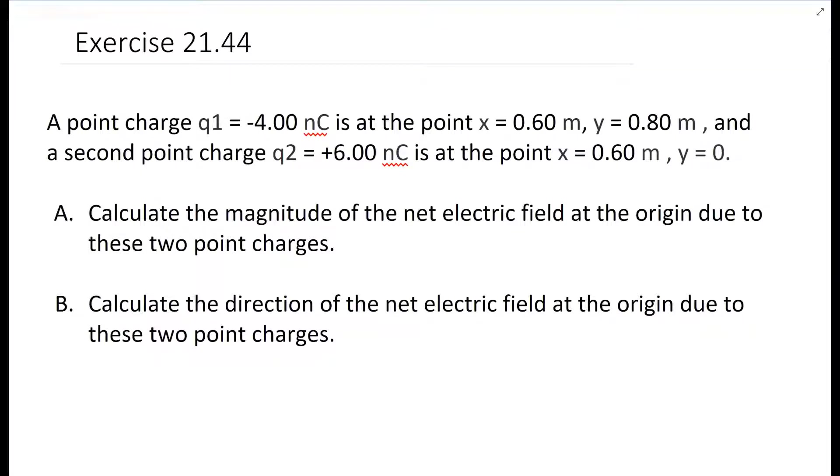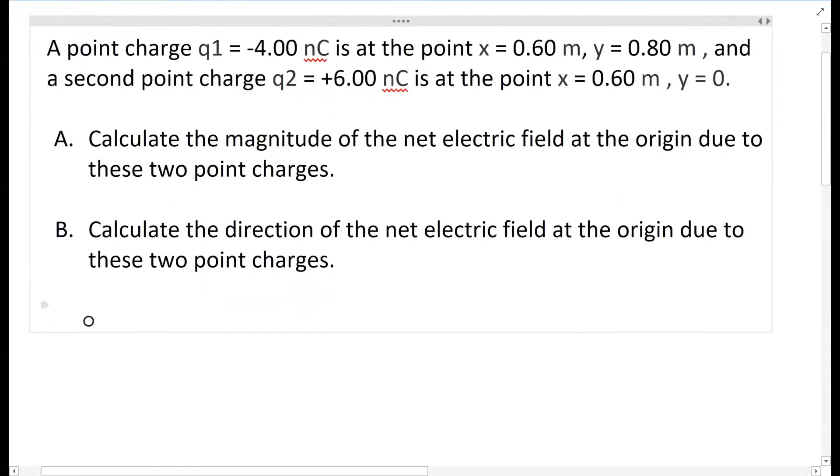All right, so this is for exercise 21.44. It gives us two charges, Q1 and Q2. Q1 is a negative charge, Q2 is a positive charge. Q1 is over at 0.6, 0.8, while Q2 is at just 0.6, with a y value of zero.